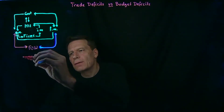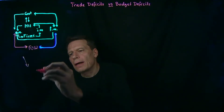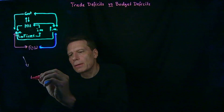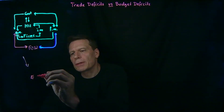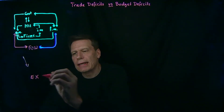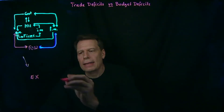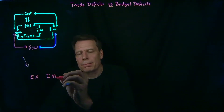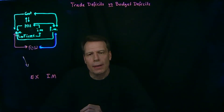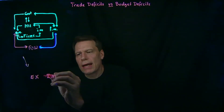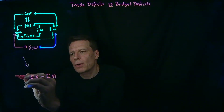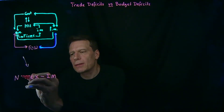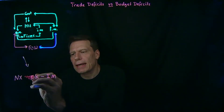Now in output markets, we've seen exports, which we'll denote by EX, and imports, which we'll denote by IM. When we subtract imports from exports, we get what we call net exports, which we denote by NX.